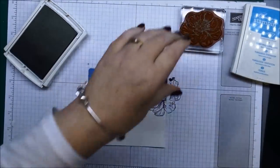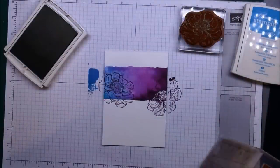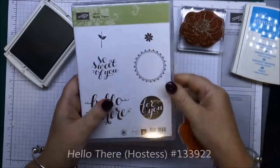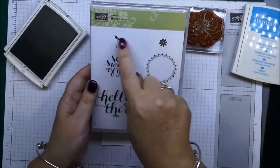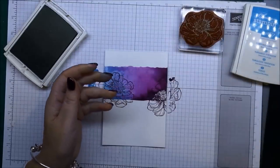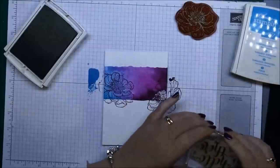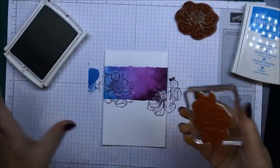And then pop that off to the side. And the other stamp set I'm going to use today is this one here called Hello There. Okay, so it's got Hello There, So Sweet of You, For You, and a couple of little stamps there. So I just take that one off, put that one on.